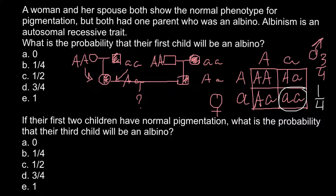So the correct answer for the first problem is answer B. The next question asks: if the first two children have normal pigmentation, what is the probability that the third child will be albino?